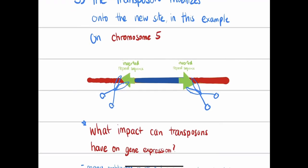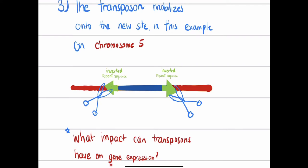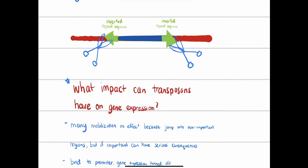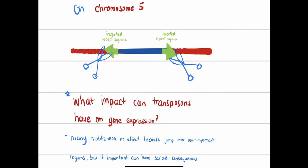Here's a brainstorming question: what impact can a transposon have on gene expression? Gene expression refers to what sequences in our bodies are being transcribed and translated. If a transposon jumps onto a non-coding area of the genome — an area that's just being repeated and not transcribed or translated — then nothing serious happens; everything is still fine.